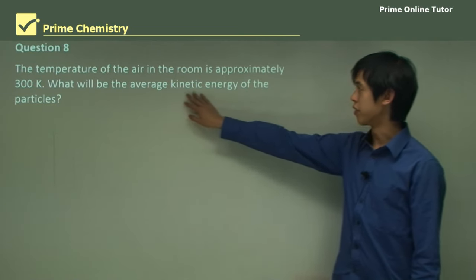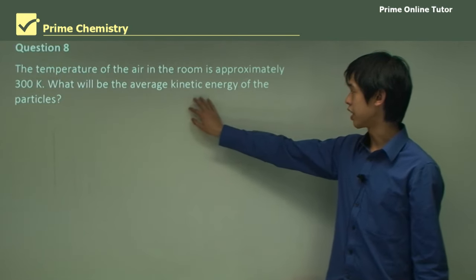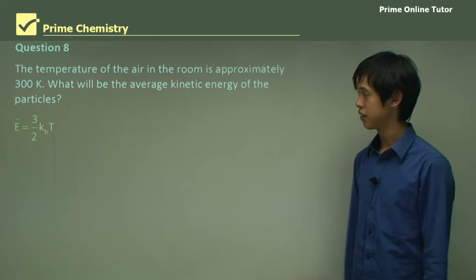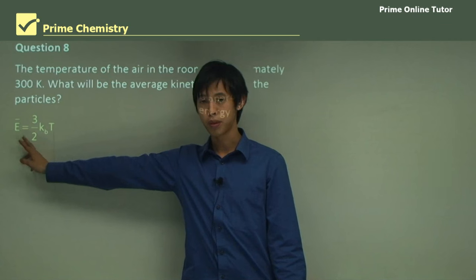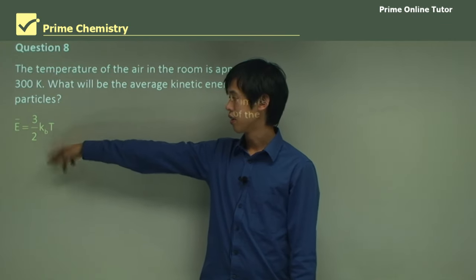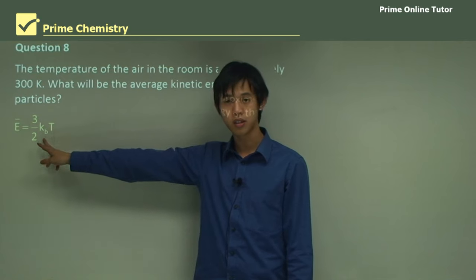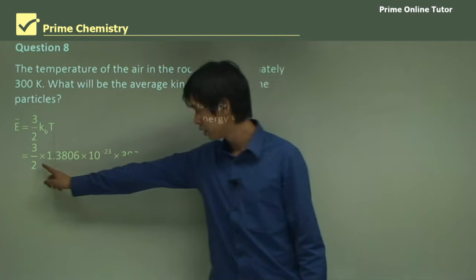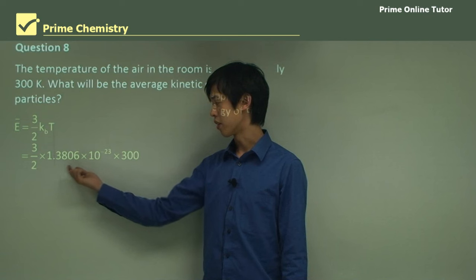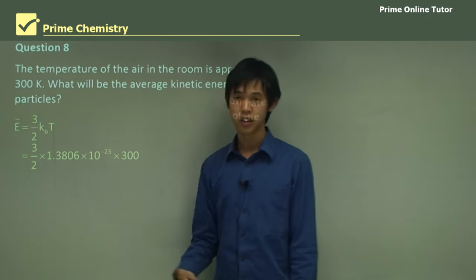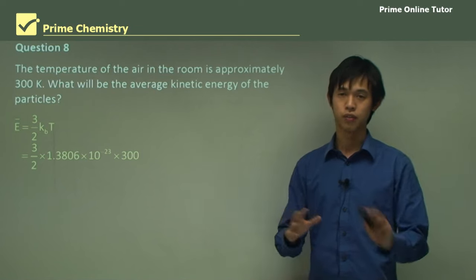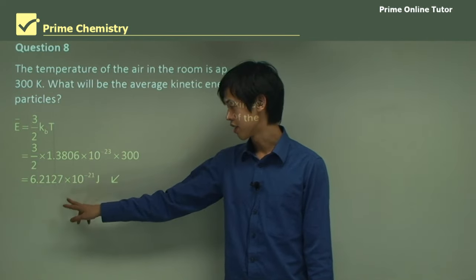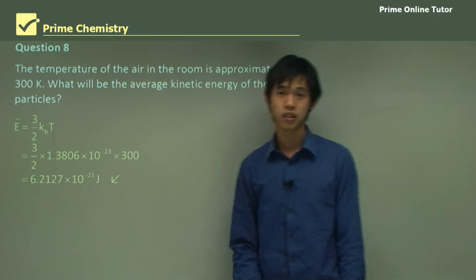Question: The temperature of air in the room is approximately 300 Kelvin. What is the average kinetic energy of the particles? Using the equation E-bar equals 3/2 times k_B times T, where the temperature must be in Kelvin. Boltzmann's constant is 1.3806 × 10⁻²³ in SI units. Performing the multiplication gives 6.2127 × 10⁻²¹ joules.